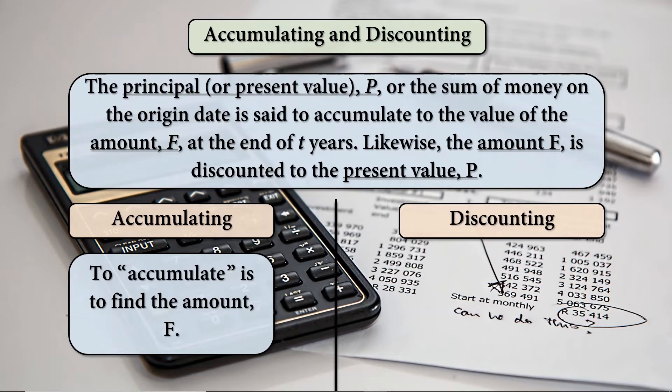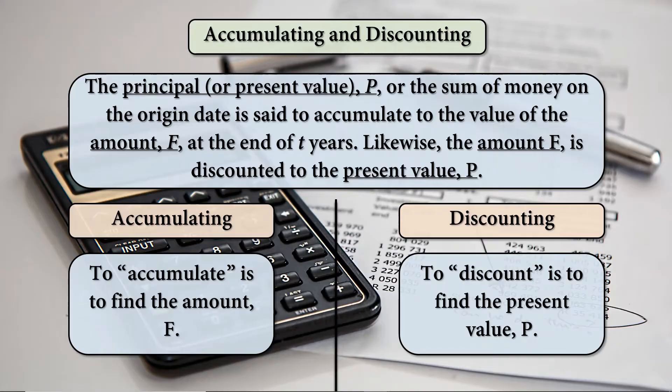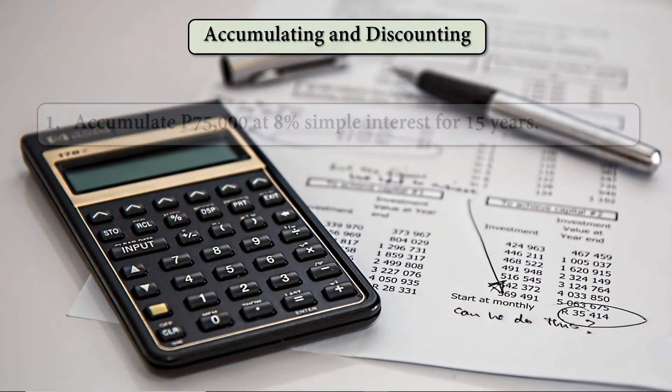To accumulate is to find the amount F. So F, which is the future value, is also called amount. To discount is to find the present value P.